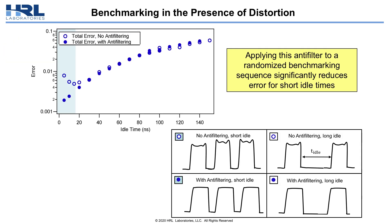How does this manifest itself in real qubit control sequences? At the top of this slide, you can see the significant improvement in total gate error once we go to idle times that are relatively short — the idle time being the time in between exchange pulses. Without applying a pre-distortion anti-filter to our pulse sequences, the falling edges of exchange pulses begin to run into subsequent pulses, building up on top of each other and accumulating more error for shorter idle times. Applying this anti-filter eliminates this effect, and the improvement in error rates for short idle times is actually quite significant.